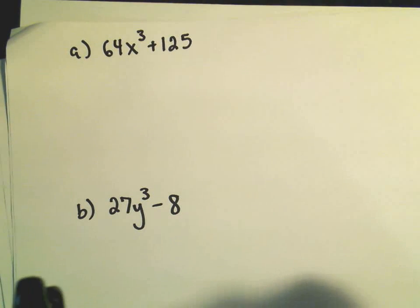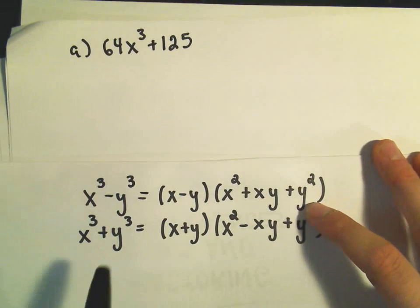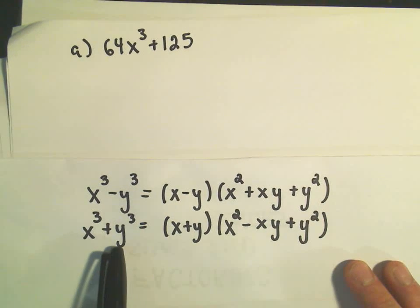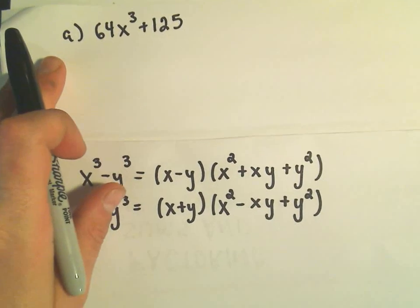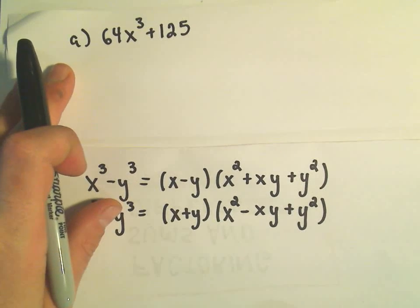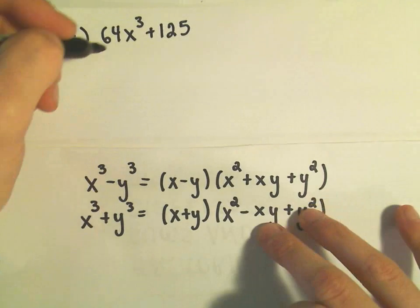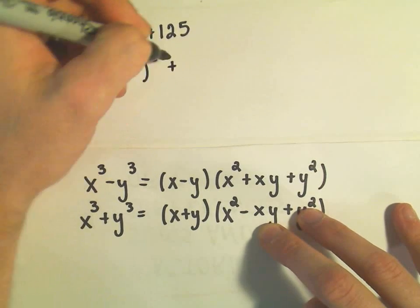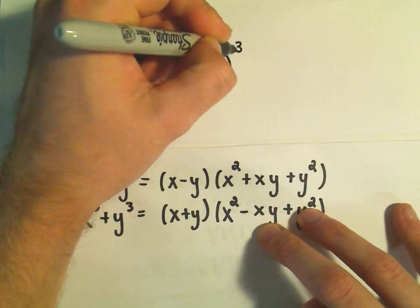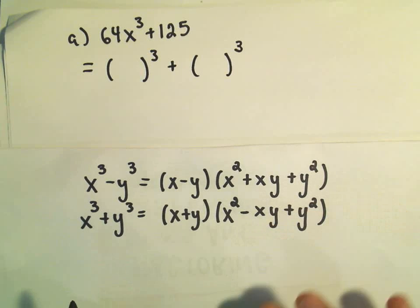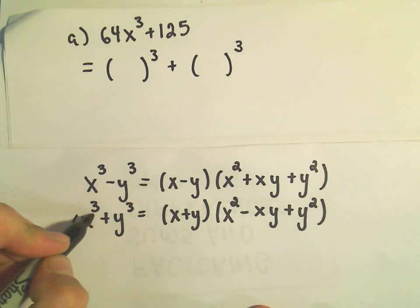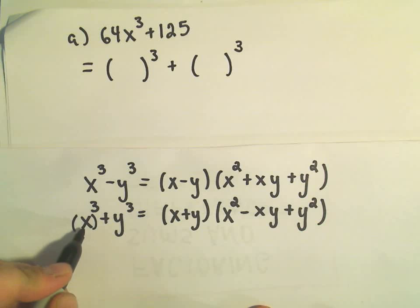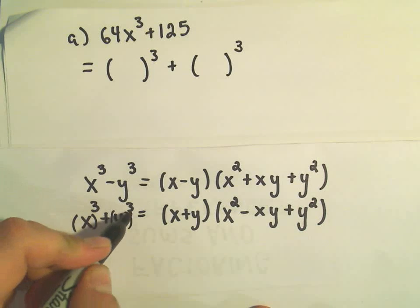So it looks like in this one we'll have to use the bottom formula. It looks like we have something cubed plus something cubed, but the first thing I'm going to do is just rewrite it a little bit. I'm going to rewrite my 64x³, and what I'm going to do is I want to write that as something cubed plus something else cubed. That's kind of how I'm interpreting this second formula.